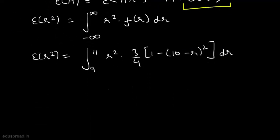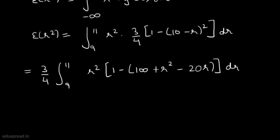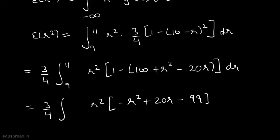Since 3/4 is a constant, we can take it outside. Now, expanding (10 minus r)² gives 100 minus 20r plus r². So inside we have r² times (1 minus 100 plus r² minus 20r) dr. I have expanded (10 minus r)² and this gives us (3/4) times the integral of (r⁴ minus 99r² plus 20r³) dr, integrated from 9 to 11.